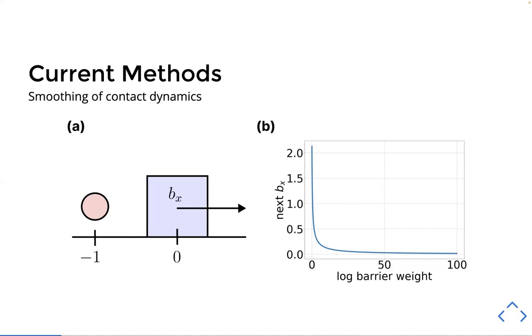And the log barrier weight determines how much force the constraint can apply even when not being active. And so in this plot on the right, you see that for a low log barrier weight, which corresponds to being able to apply a greater force at the same distance, if the log barrier is near zero, then the box is pushed beyond x equals two. And if the log barrier weight is around 100, then the box hardly moves.